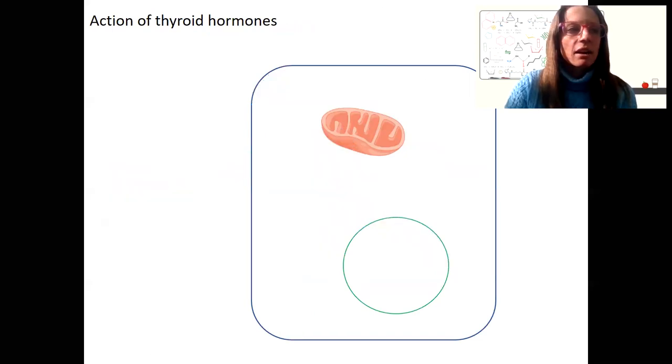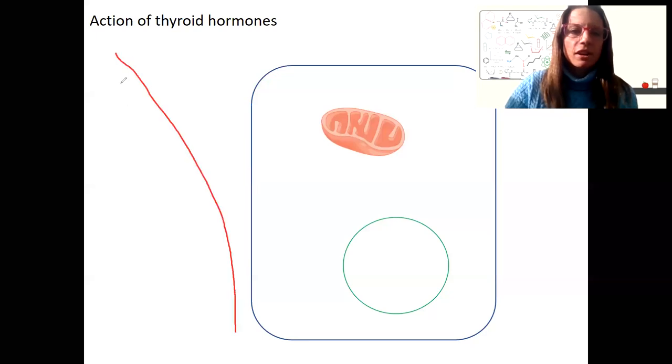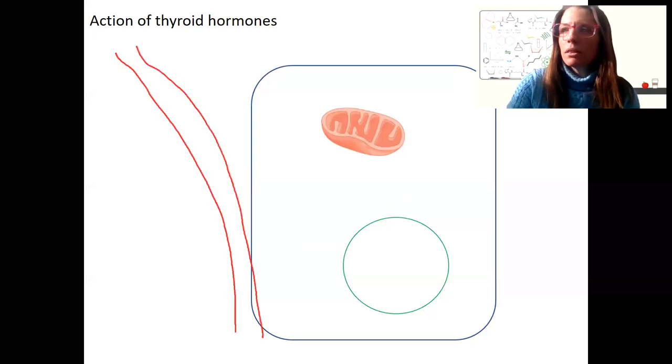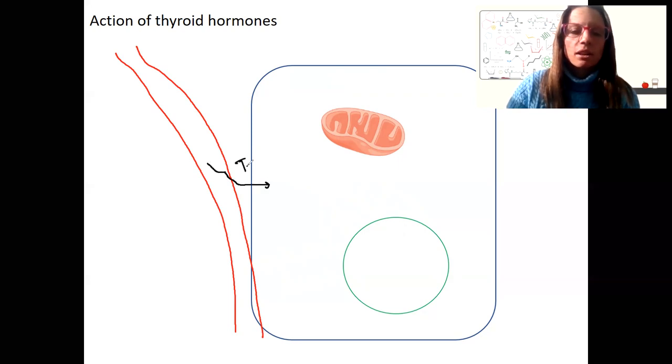Okay, so we've got thyroid hormones coming in from the bloodstream. I'm going to draw the bloodstream. They're coming by this cell. Got some thyroid hormones. Let's just call it T3. It's going to go into the cell. How does it do that? Well, it's hydrophilic, so it can't just pass to the cell membrane, but there is going to be a protein, a transporter, that allows it to come in.